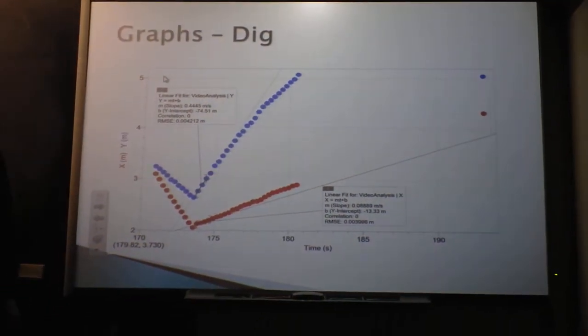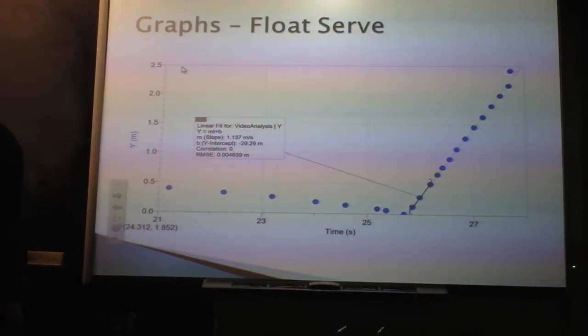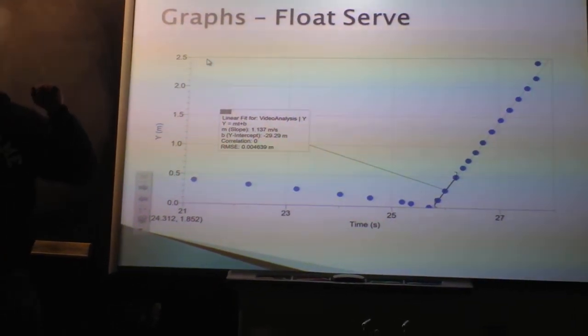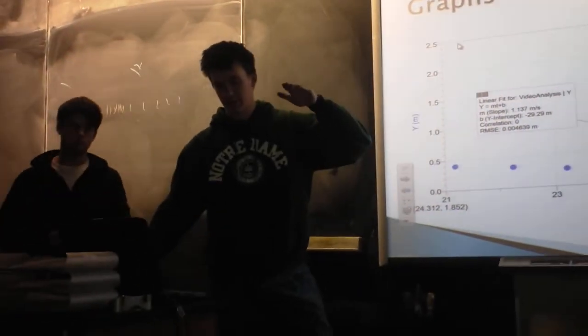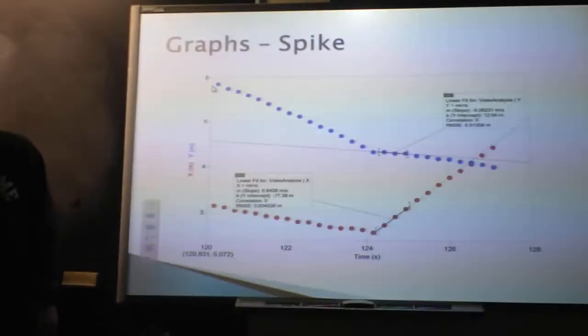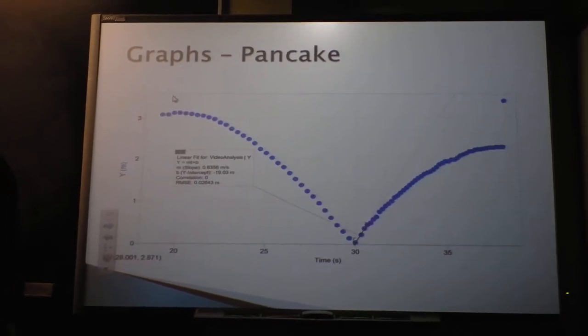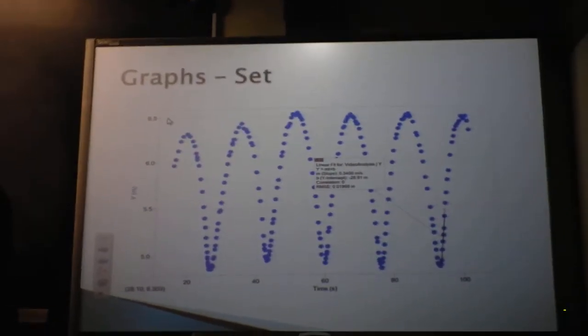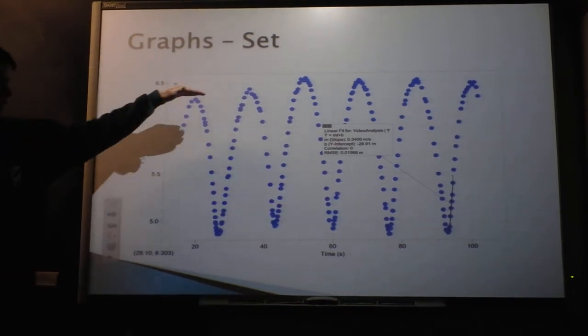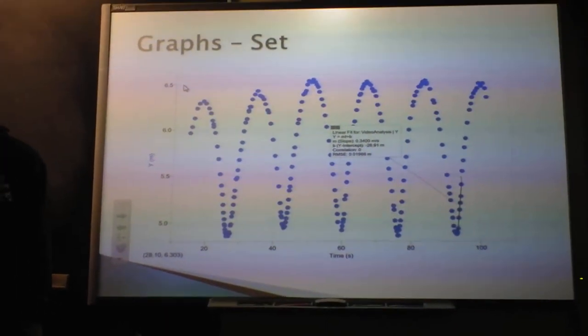These are just more graphs. For the dig, since it actually goes in the X and Y direction, we had to do a little bit more fancy stuff. For float serve, we decided to find out the angle. When our person hit the ball, it wasn't completely in the X direction, so we found out the angle of launch from it. Here's the spike, which was pretty cool. The pancake, which kind of looks like a ball bouncing almost. This set, which I liked a lot because the person I was recording did a great job of keeping the ball at constant height for constant velocities.